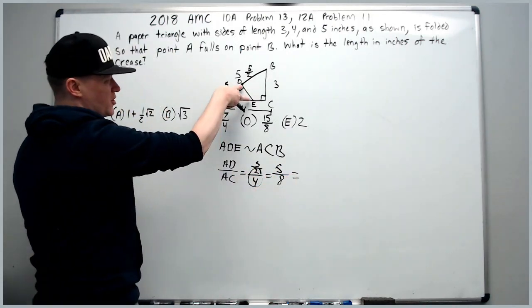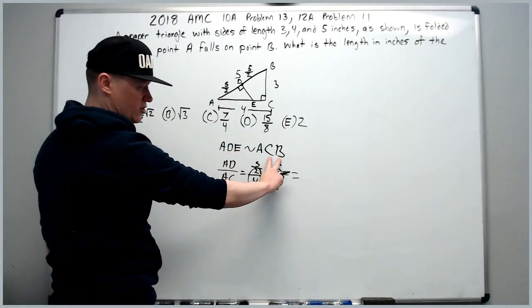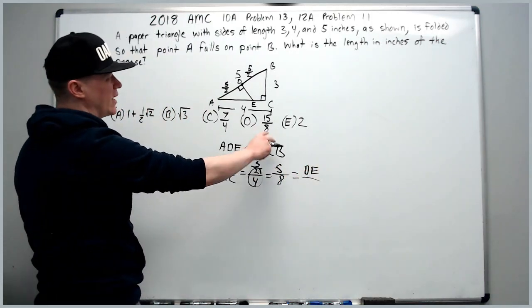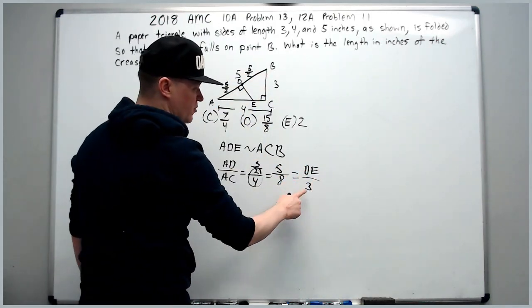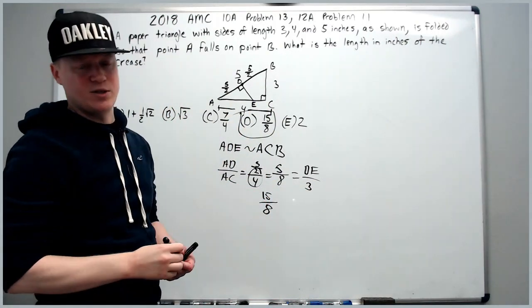Now we're looking for the crease, which we now know as DE. So we're going to look at DE, which is the second two letters, over the second two letters here. DE over CB. We know that CB is 3. Bring the 3 up to get 15 over 8, which is answer choice D.